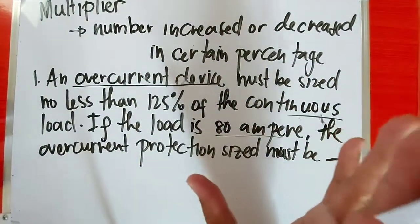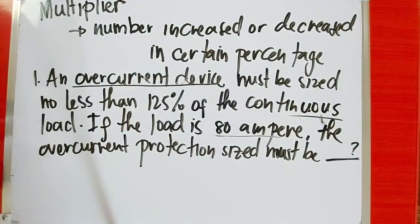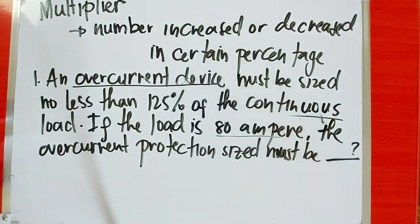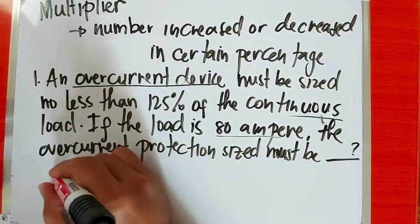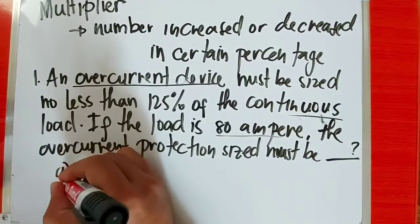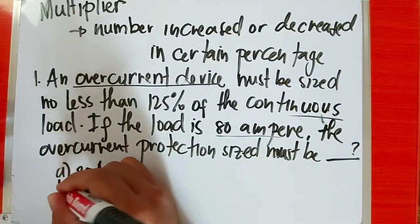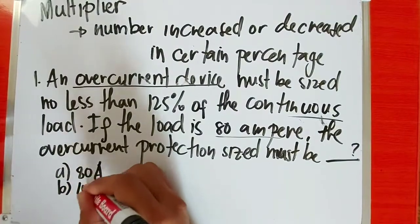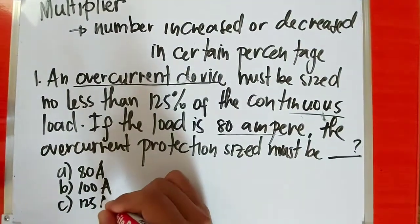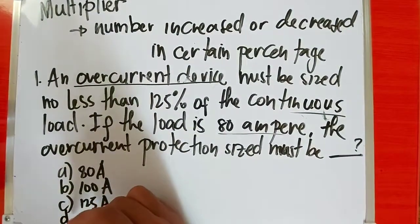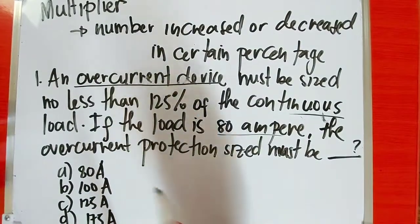So, overcurrent protective device - this is the circuit breaker or fuse. You need to size it at 125% if it's a continuous load. So whatever the load is, you multiply it by 125%. So if there are choices, for example: letter A is 80A, letter B is 100A, letter C is 125A, and letter D is 175A. So these are the choices.